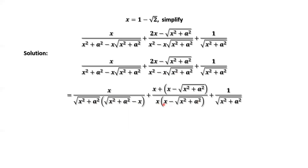The inside part is x minus square root of x squared plus a squared. We rewrite the numerator of the second term as x plus x minus square root of x squared plus a. If we split this term into two parts, x and x will be cancelled out for the first one. In the second part, this one will be cancelled out. We want to repeat the same idea for the first one.